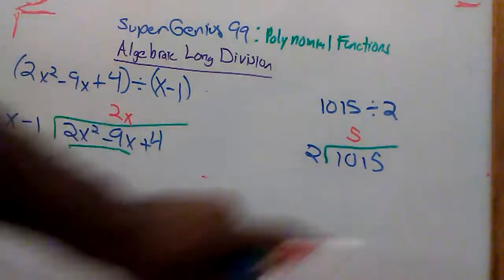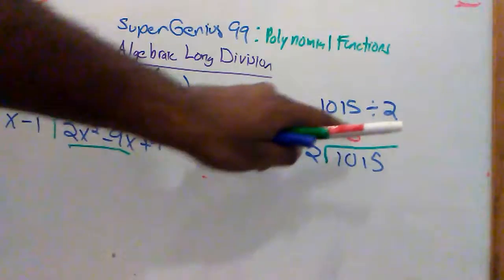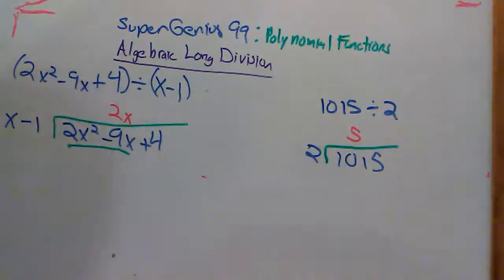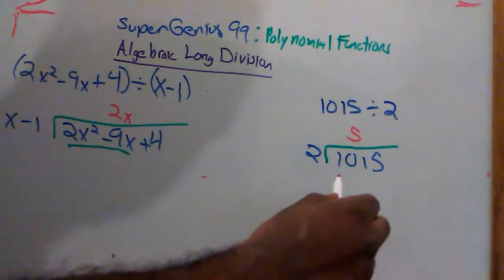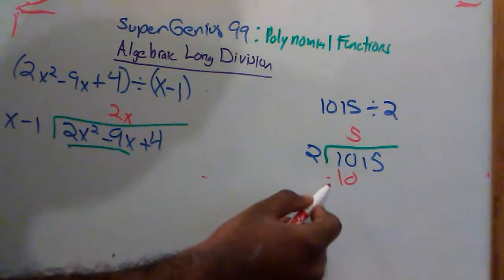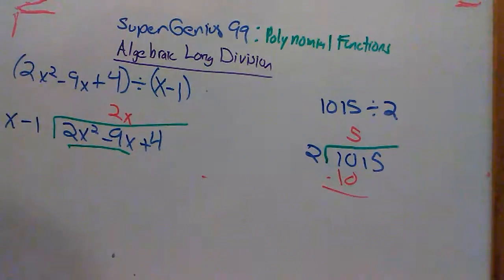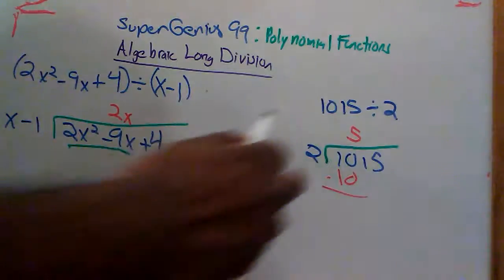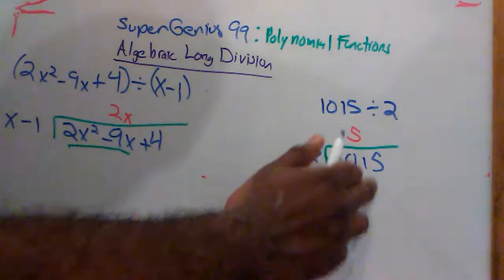What happens in regular division after you find this 5, you do what? You multiply. You say 5 times 2 equals 10. And then, what's your next step? Yes, you subtract. You get the difference. So it's 10 minus 10, 0. And then, you bring the next piece down.